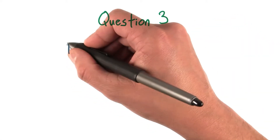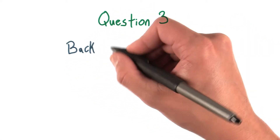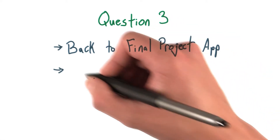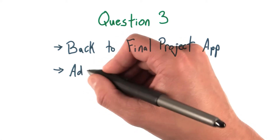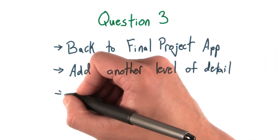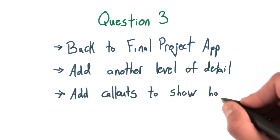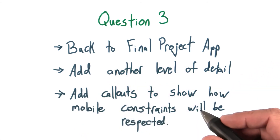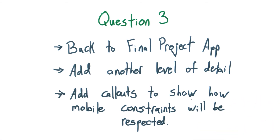In this question, you're going to go back to the final project app you worked on in the previous lesson. Much like you saw in this lesson, you're going to add another level of detail to your high-level flow. You should also add callouts in Prezi to show how mobile constraints will be respected. There's a template Prezi presentation which you can find in the instructor notes that will help you out.